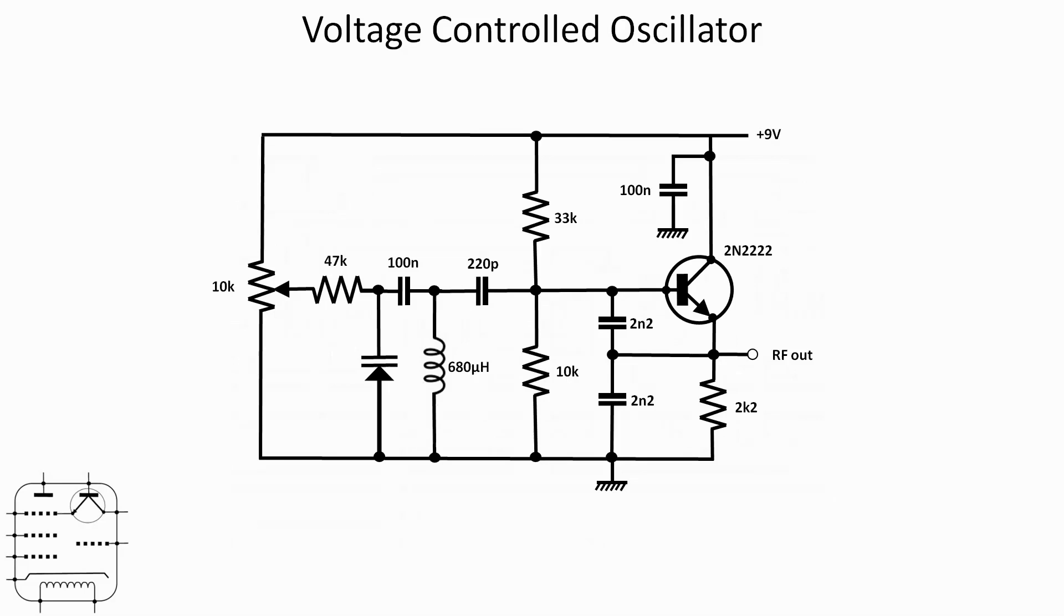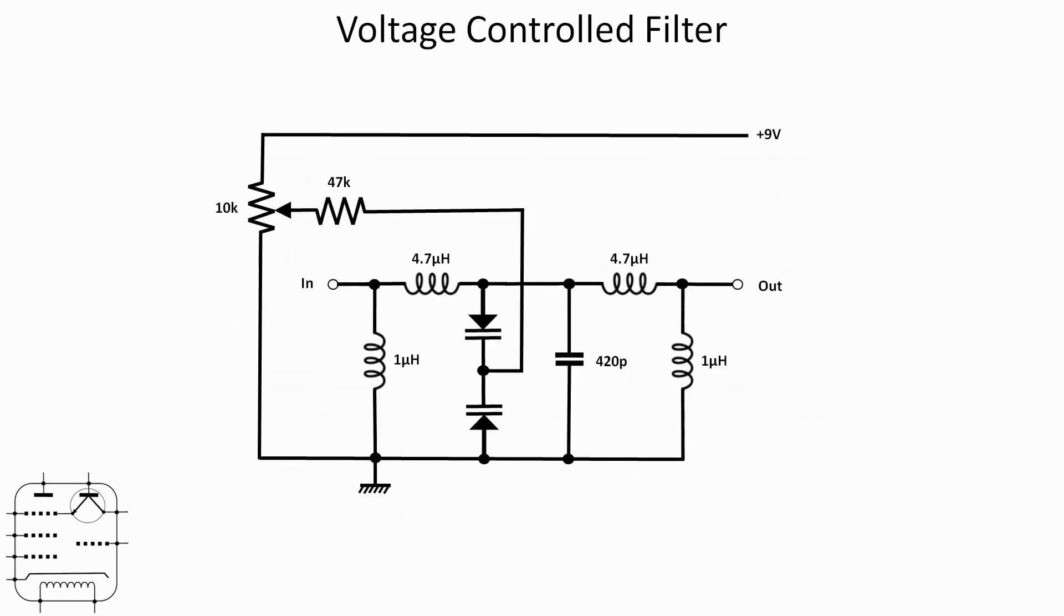So this is a voltage control filter and quite a nice little circuit. What we've got going on here is we've got a filter with an input on the left and an output on the right and it consists of four inductors and actually three capacitors. So we've got a fixed 420 picofarad on the right there but then we've got two varactors being driven by the same voltage divider and 47k resistor.